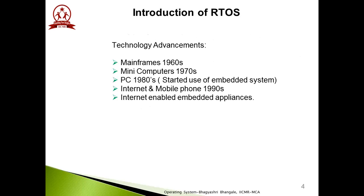Here are some technology advancements of RTOS. First, mainframes came in 1960. After mainframes, minicomputers came in the 1970s. After minicomputers, the desktop era came — that is personal computers in the 1980s. From the 1980s, they started the use of embedded systems. After embedded systems, the internet era came — that includes mobile phones and Android phones in the 1990s. Then internet-enabled embedded appliances started growing.